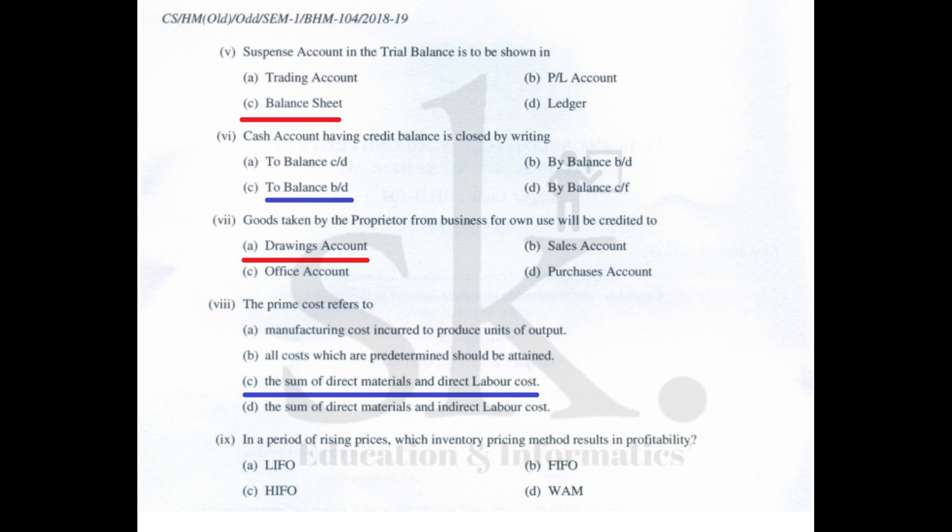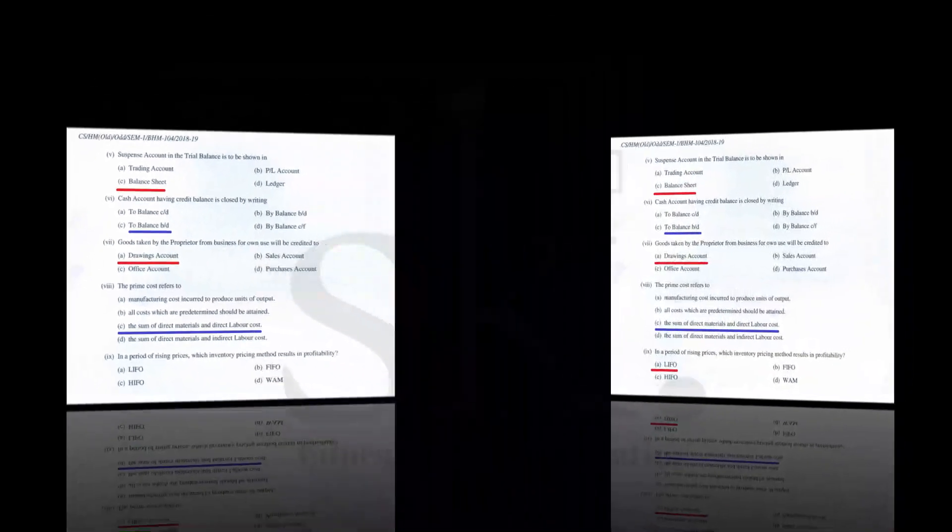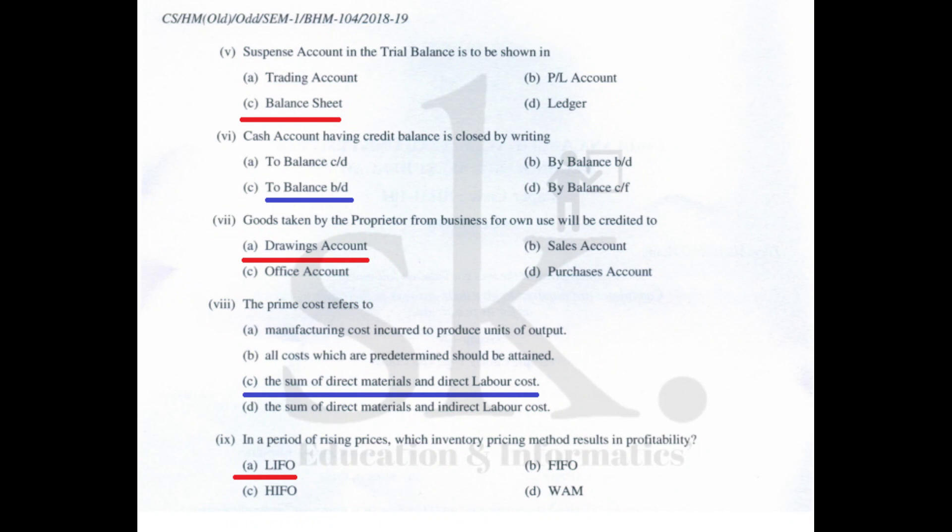Question number nine: in a period of rising prices, which inventory pricing method results in higher profitability — in an inflationary situation, products purchased later will be at a higher price. Issuing stock under the LIFO method results in higher profitability. The correct option is A, LIFO.